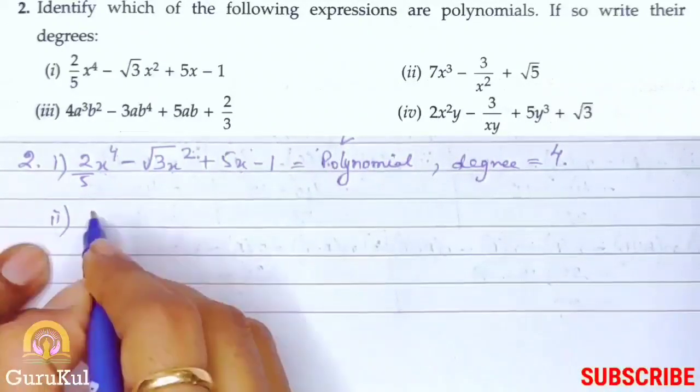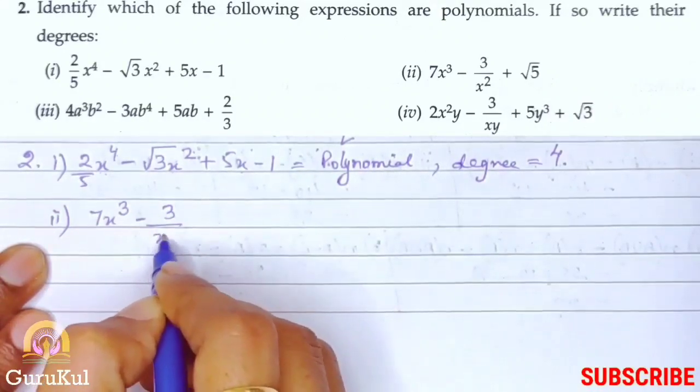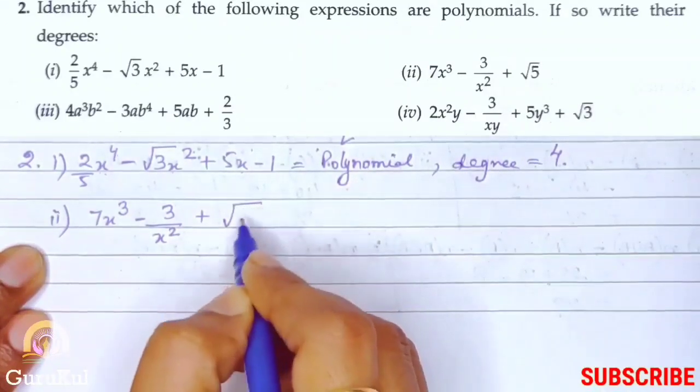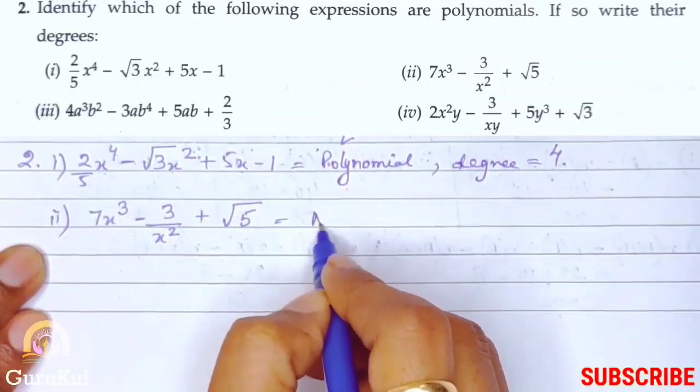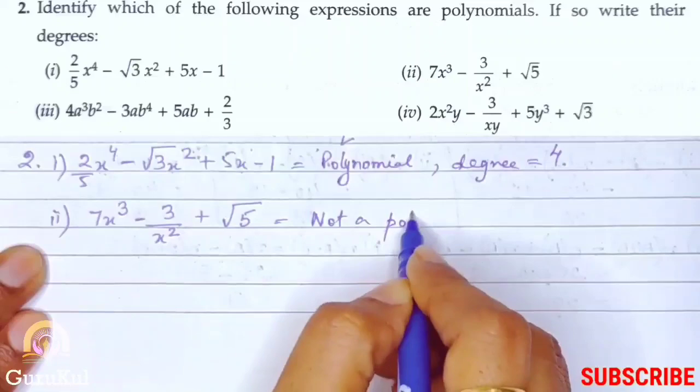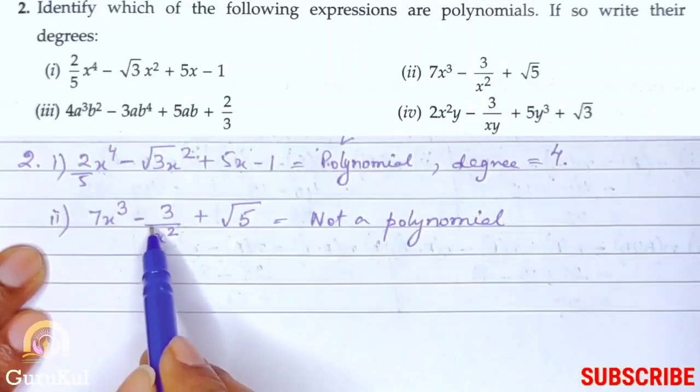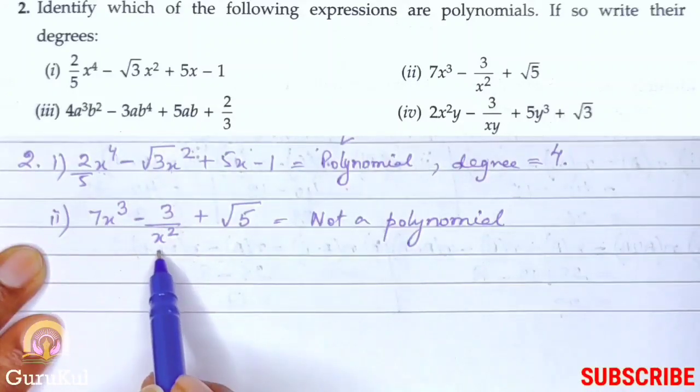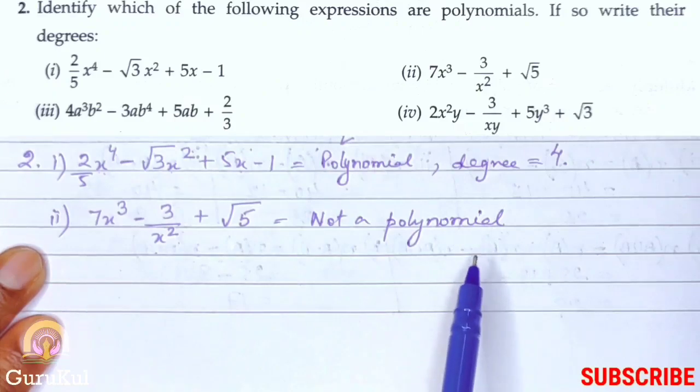Second one. Seven x cube minus three by x square plus square root of five. This is not a polynomial. Not a polynomial. Why? Because see. In a polynomial, literal should never be in the denominator. As you can see, x square is at a denominator place. So, this is not a polynomial.